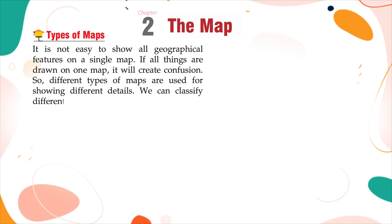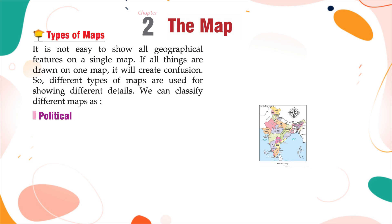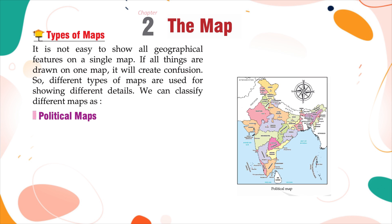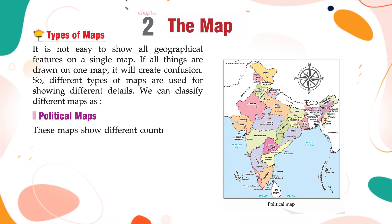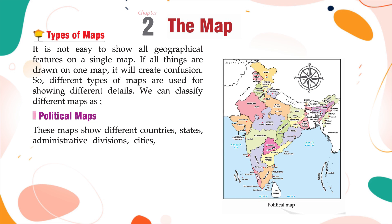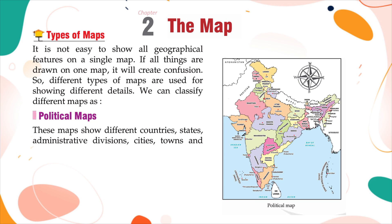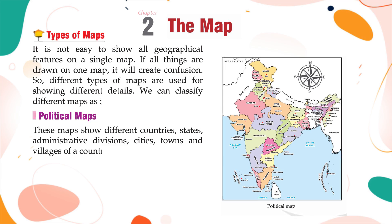We can classify different maps as: Political Maps — these maps show different countries, states, administrative divisions, cities, towns, and villages of a country.